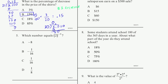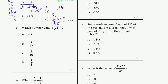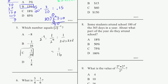Problem number five: which number equals 2 to the minus 4 power? This is a little bit of review of exponents. 2 to the minus 4 is the same thing as 1 over 2 to the fourth power. That's all a negative exponent does — it means 1 over the base to the positive exponent. And this is 1 over 2 times 2 times 2 times 2, which equals 1 over 16. So that is choice C.